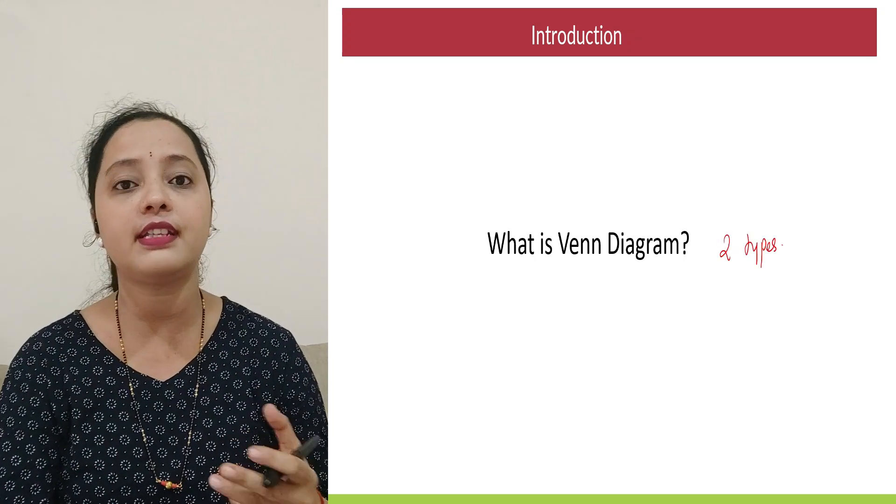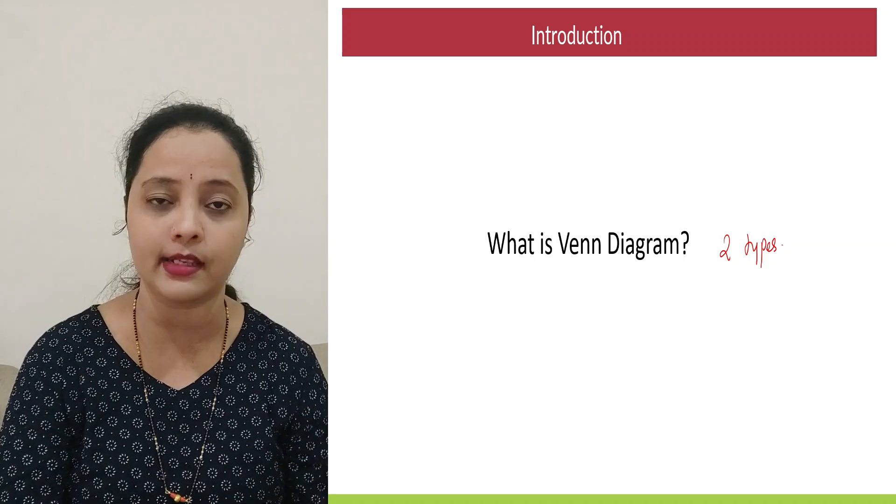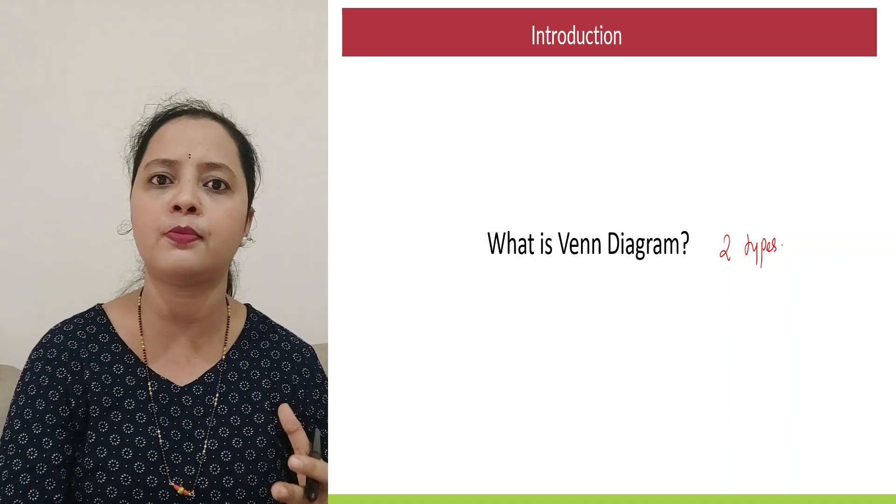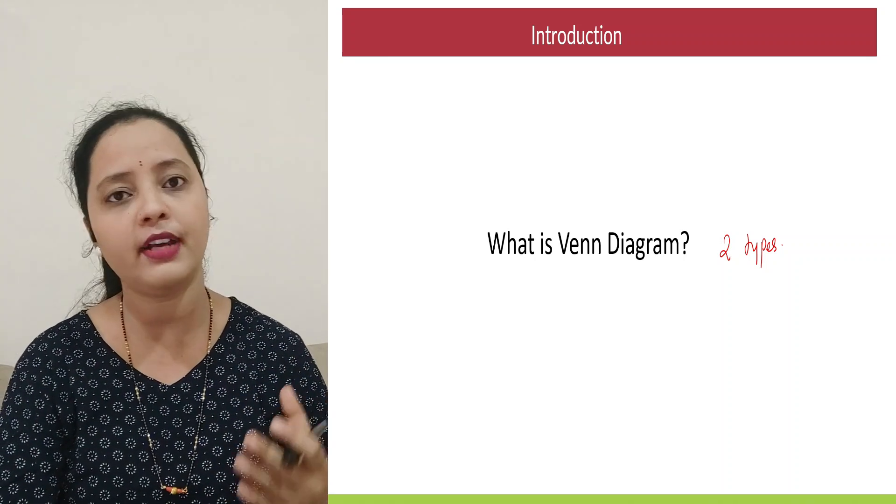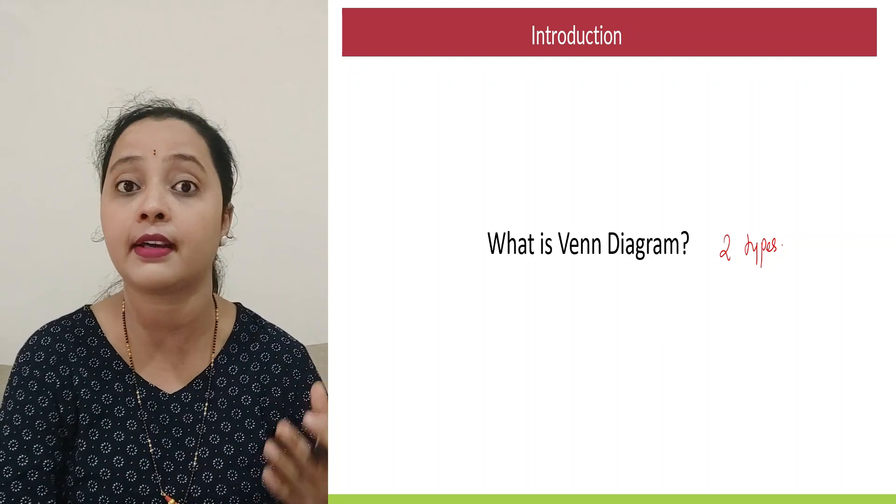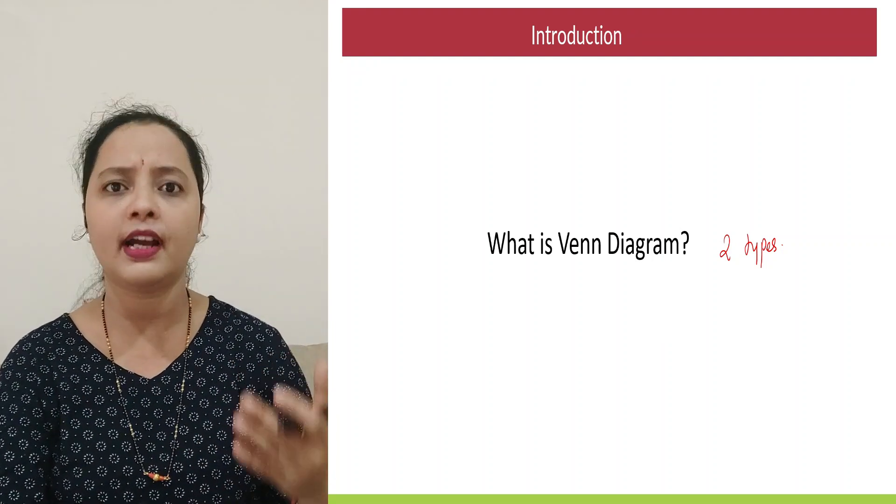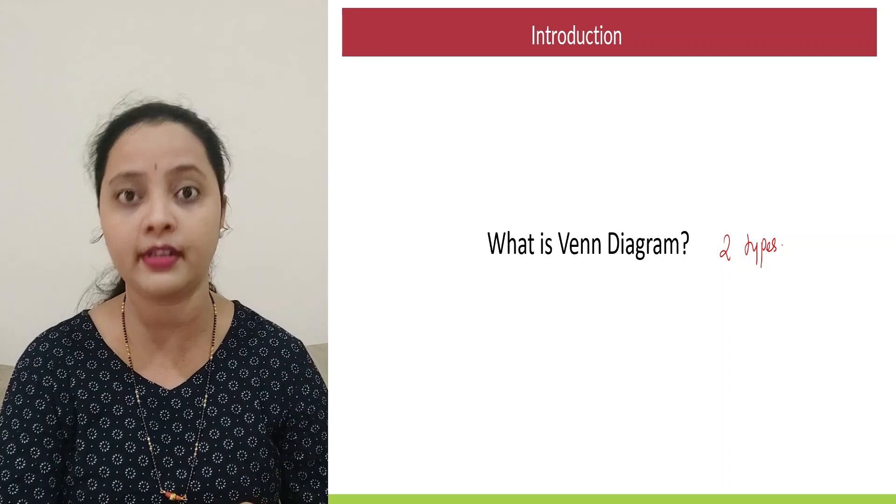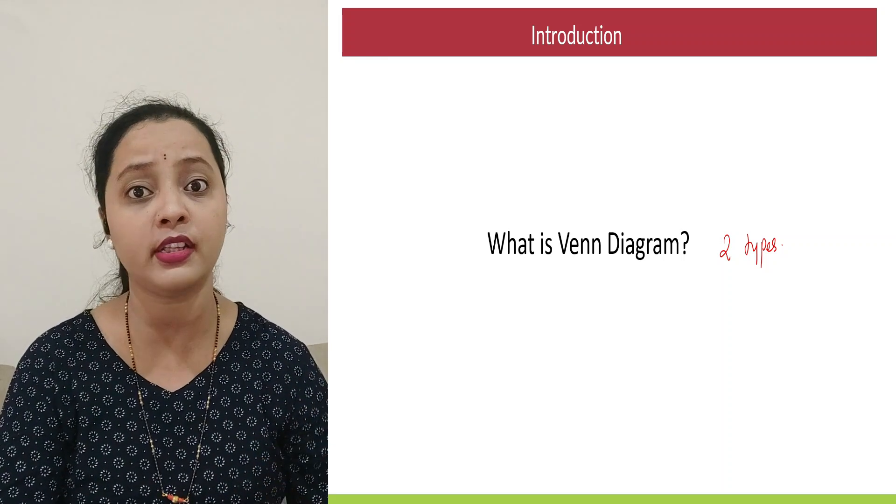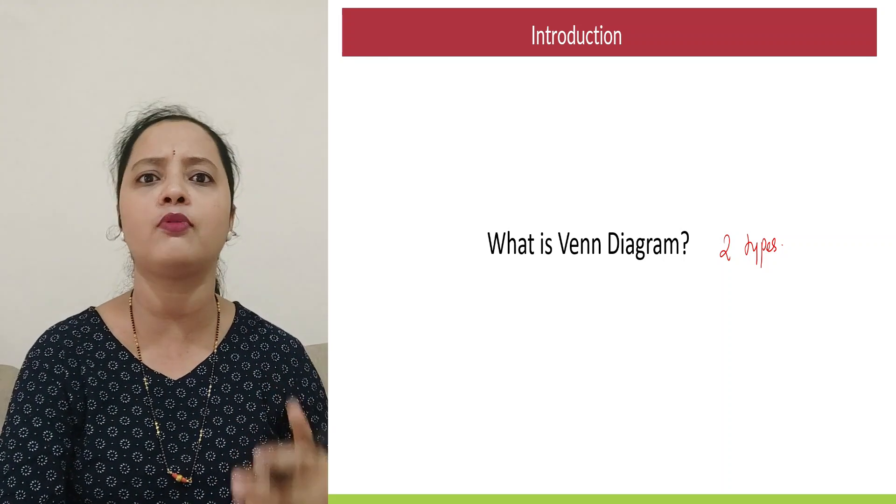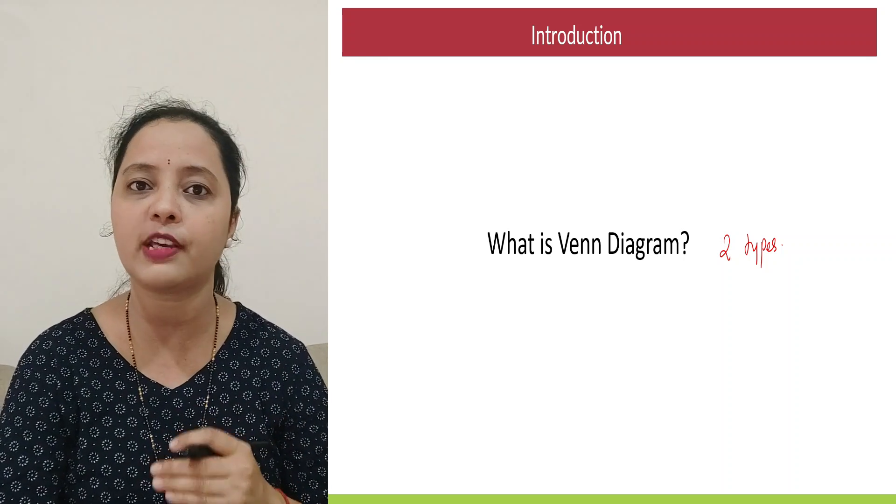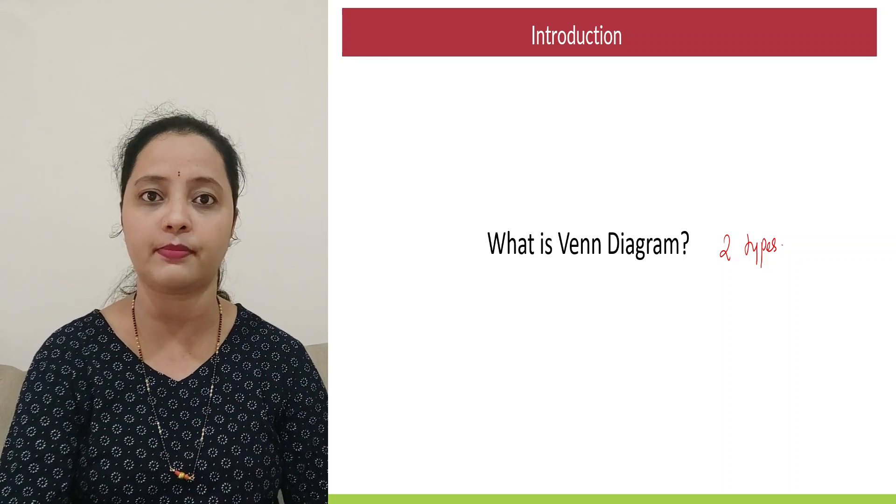The first type would be basically they'll give you certain elements and they'll give you four options where diagrams would be made. You'll have to select which of the option is the correct interpretation of the elements. And the second one would be a diagram already made with certain elements, with certain components and some sub questions below it. So those are the two types of questions we'll be discussing in this chapter.